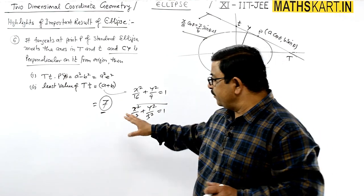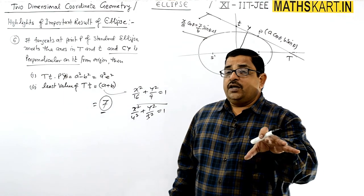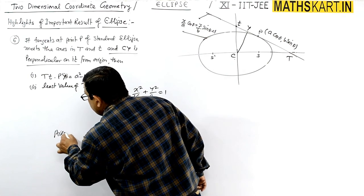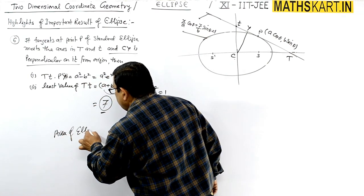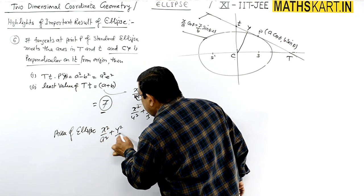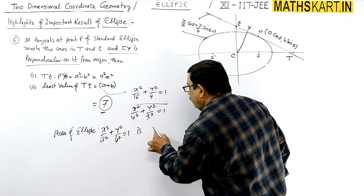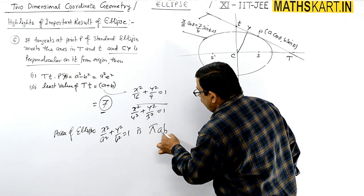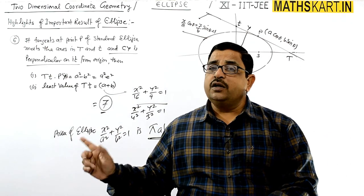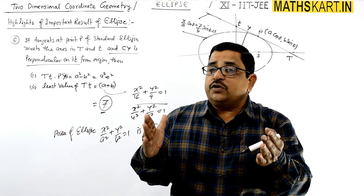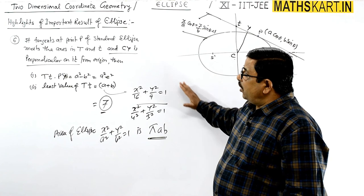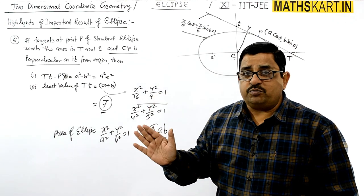Lastly, one more thing to remember: the area of ellipse x²/a² + y²/b² = 1 is always πab. So area of ellipse = πab. This can be useful in many contexts. With this, all the highlights of the ellipse are complete. After this, we will take up the next topic: diameter of the ellipse.